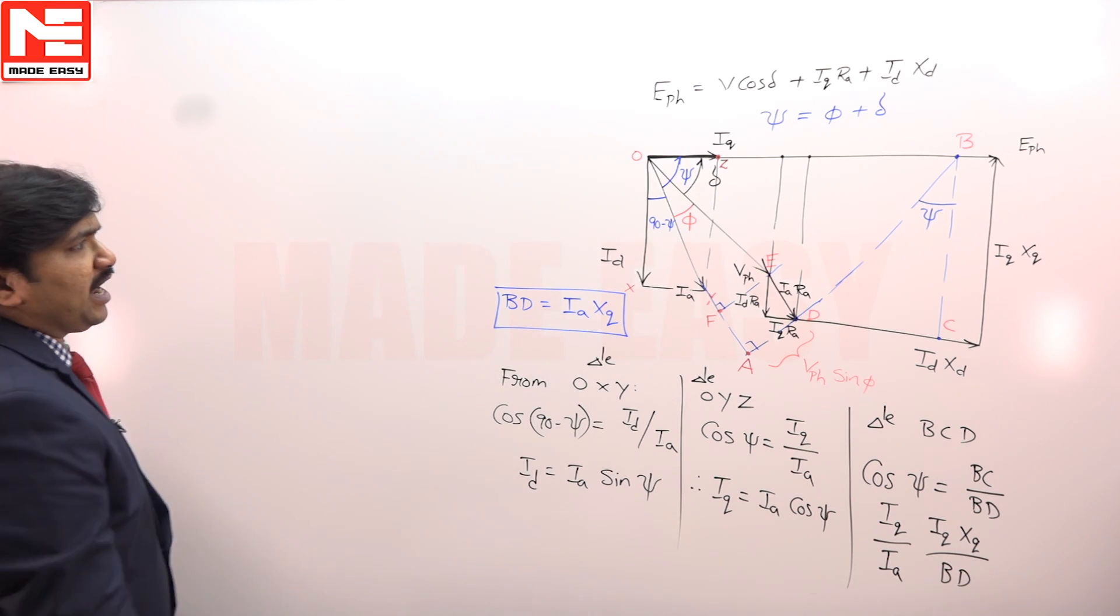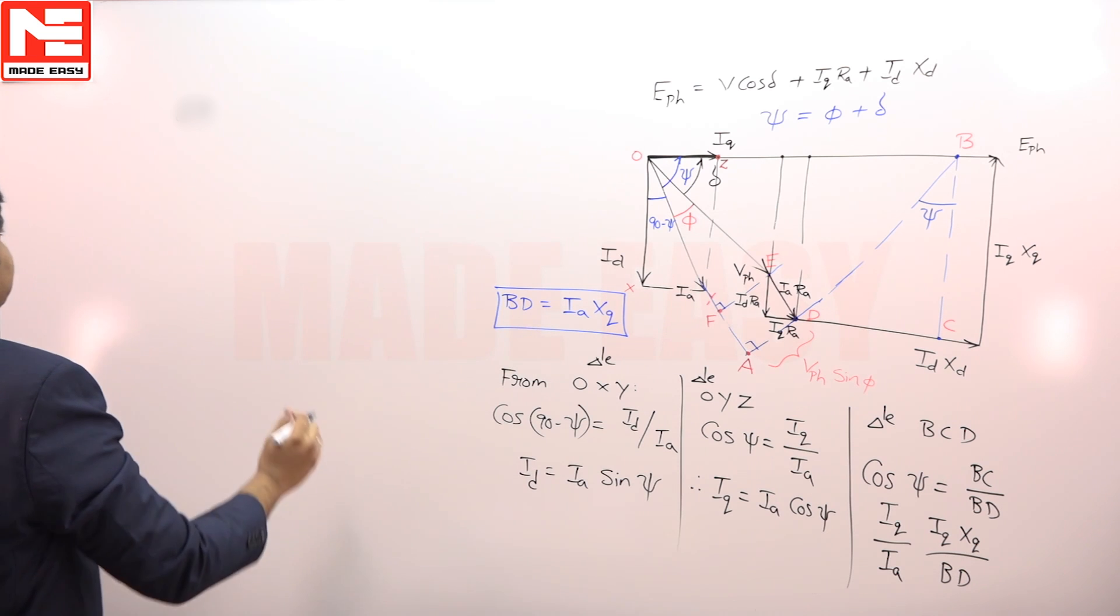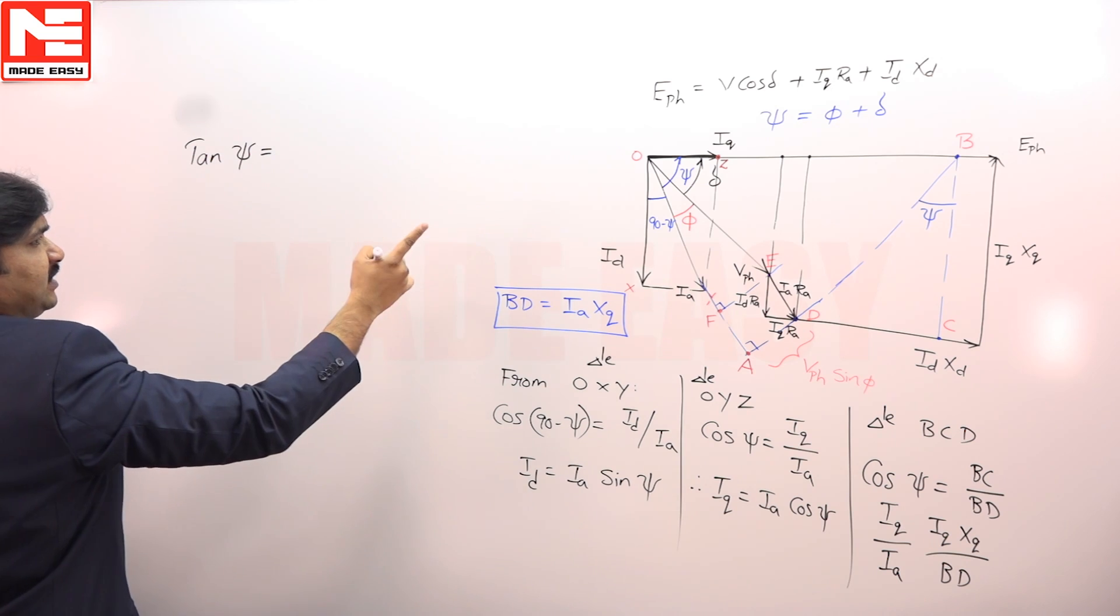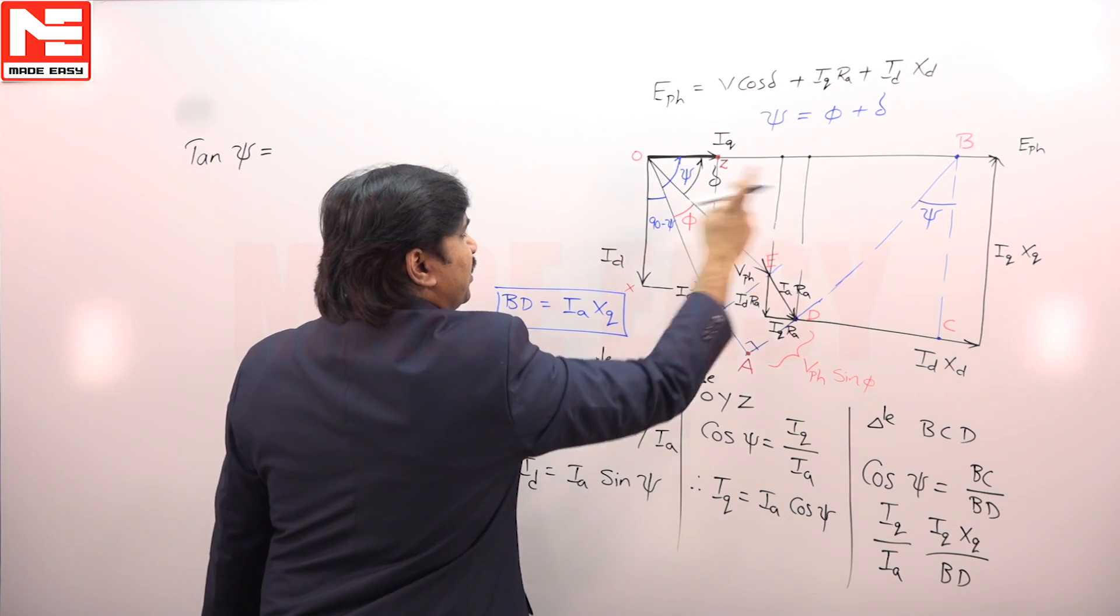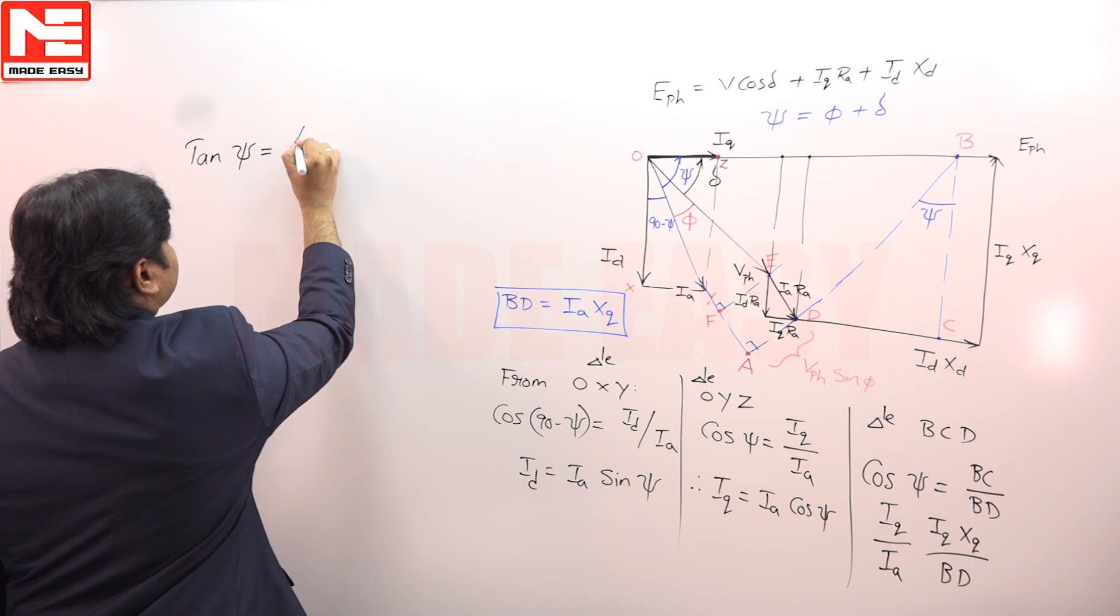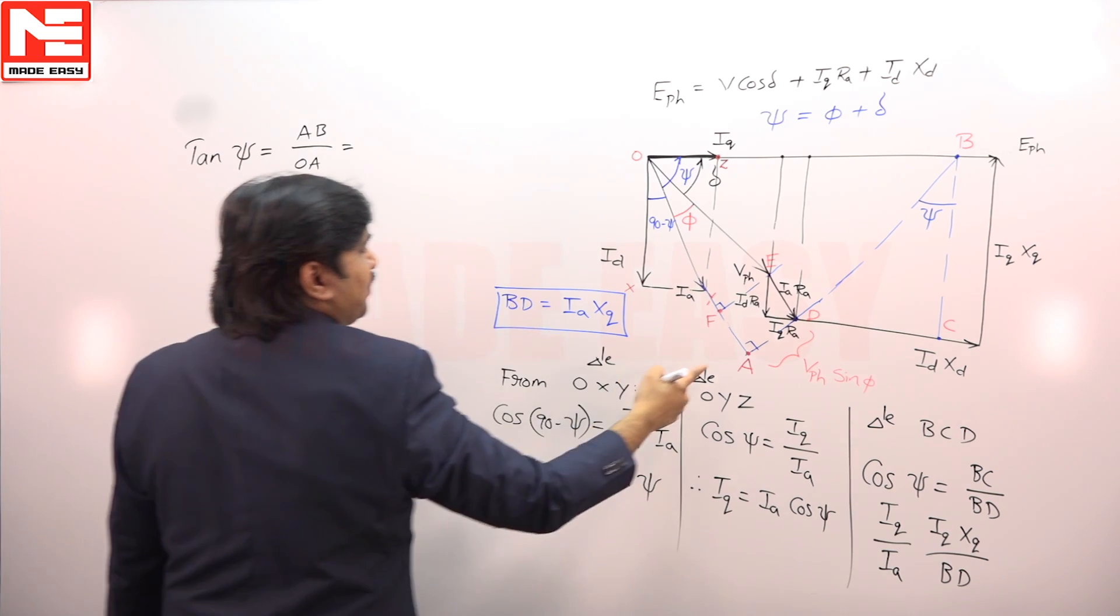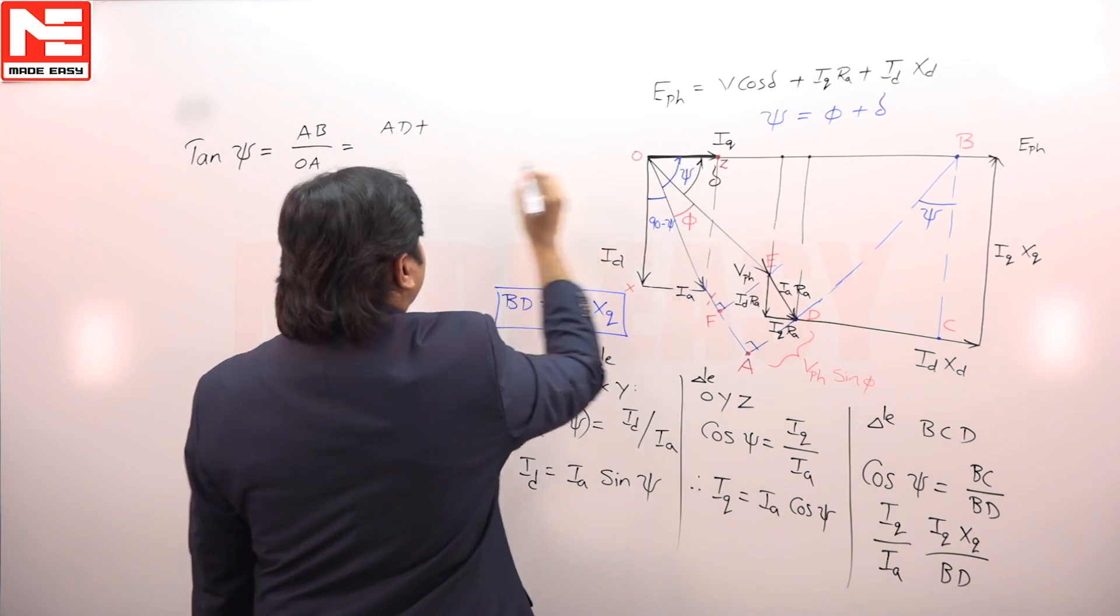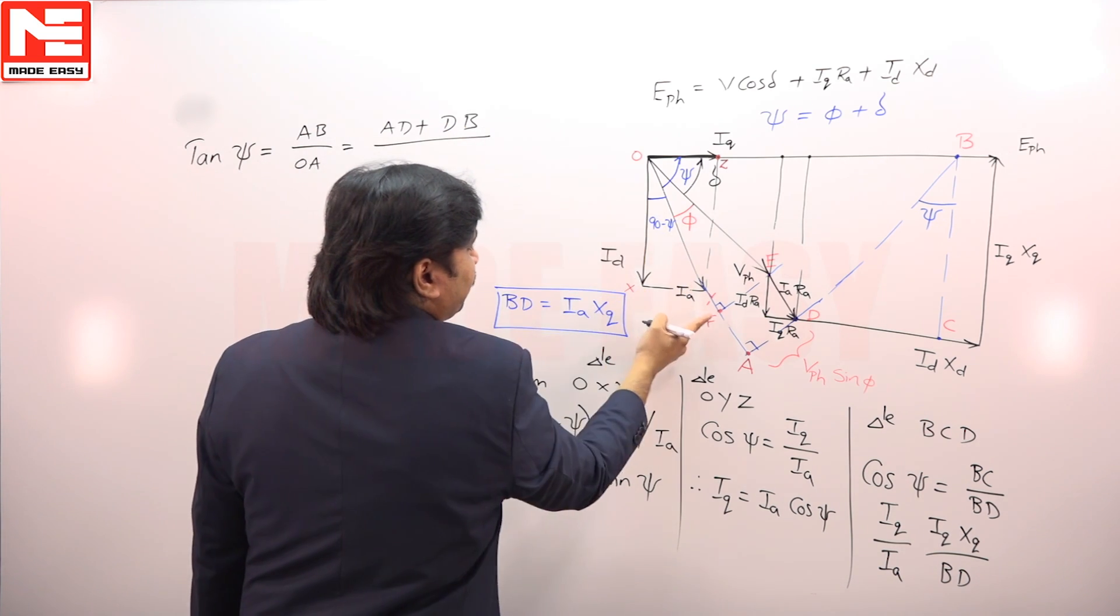Now, from triangle OAB, we can write tan psi. Tan psi is equal to AB by OA. What is AB? AD plus DB by OF plus FA.